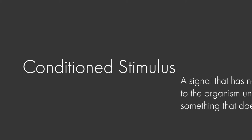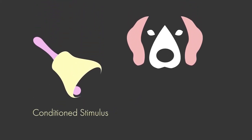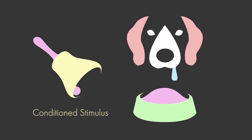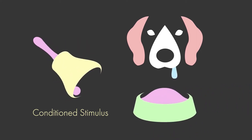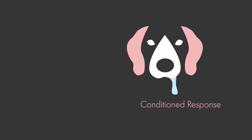A conditioned stimulus, or CS, is a signal that has no importance to the organism until it is paired with something that does have importance. In Pavlov's experiment, the bell is the conditioned stimulus. Before the dog has learned to associate the bell with the presence of food, hearing the bell means nothing to the dog. However, after multiple pairings of the bell with the presentation of food, the dog starts to drool at the sound of the bell — this drooling in response to the bell is the conditioned response.